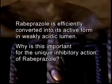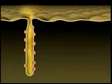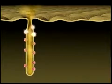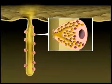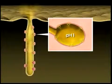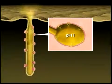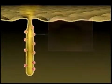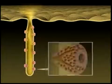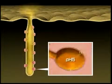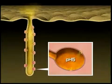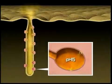Why is this important for the unique inhibitory action of rabeprazole? Gastric parietal cells are born close to the opening of the fundic gland and then migrate towards the bottom. The parietal cells near the opening of the gland are young and highly active in acid secretion; the secretory canaliculi in such cells show strong acidity with a pH as low as 1. On the contrary, the old parietal cells seen at the bottom have lowered secretory activity, and the intracanalicular pH is between 4 and 5, showing only mild acidity.